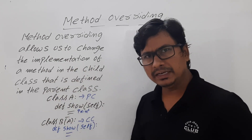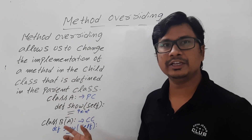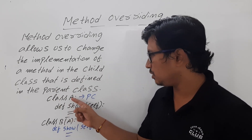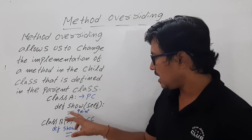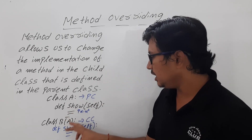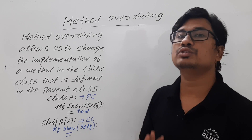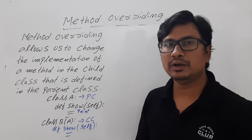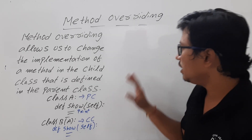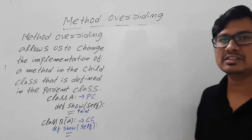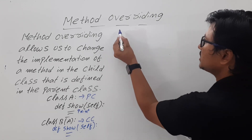To implement method overriding, inheritance is very important — you need a parent class and a child class. The name of the method should be the same and the signature also should be the same. Only then can we achieve method overriding.